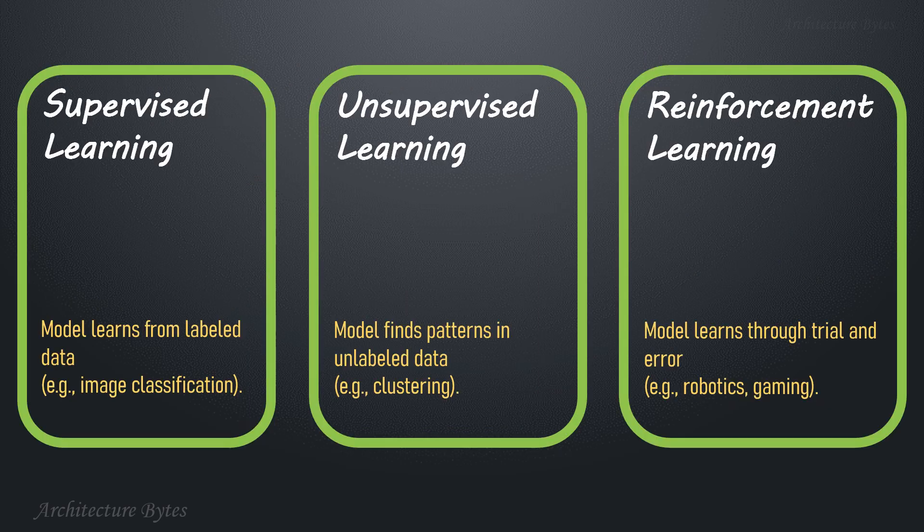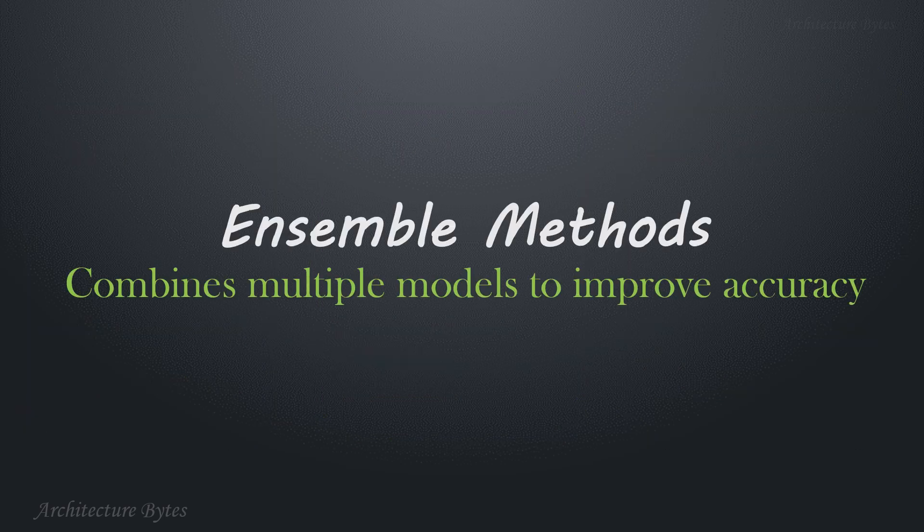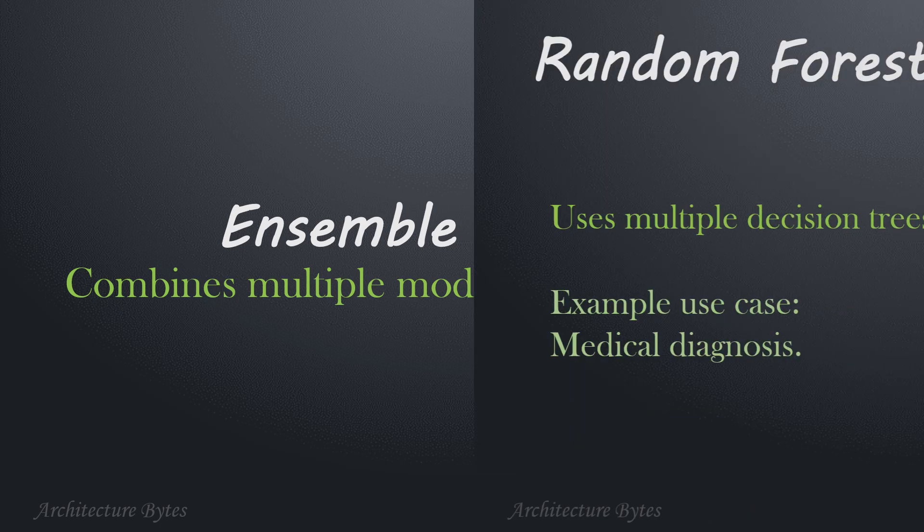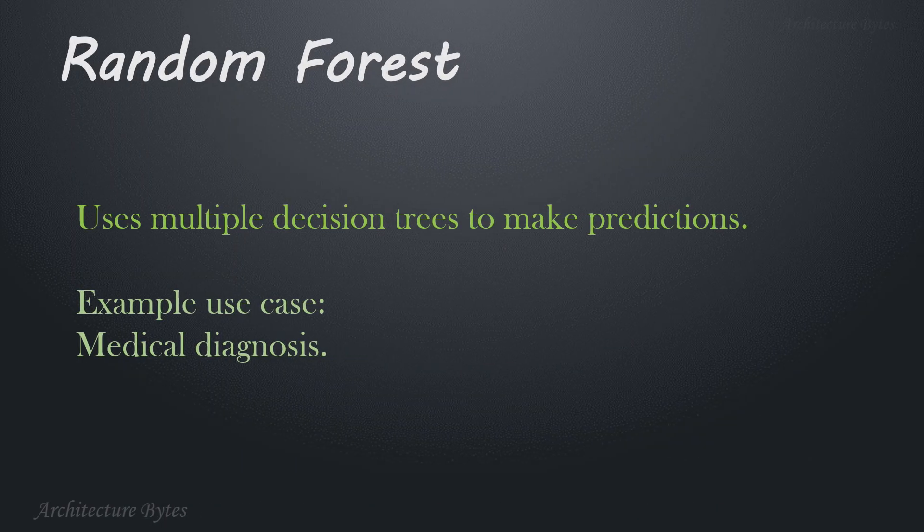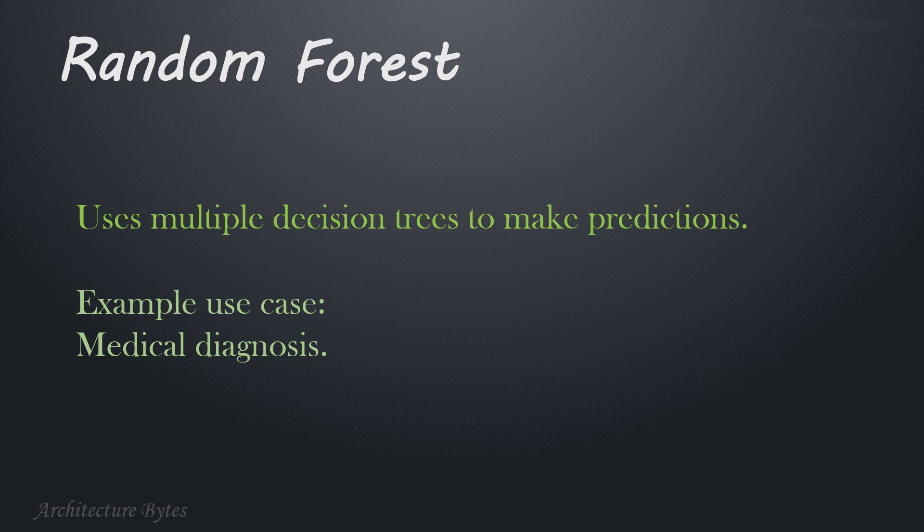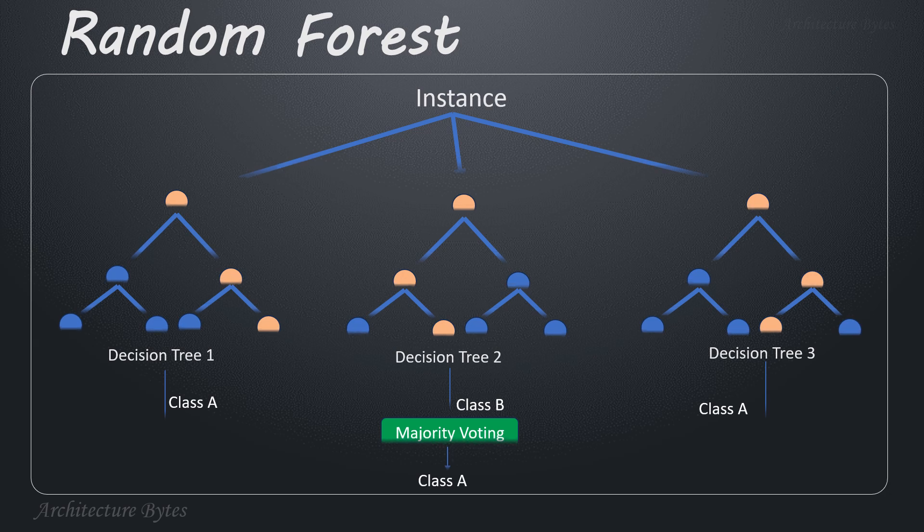Now that we have covered supervised, unsupervised, and reinforcement learning algorithms, let's look at ensemble methods where we combine multiple models to improve accuracy. Random forest uses multiple decision trees to make predictions. Example use case: medical diagnosis. It is an ensemble method that builds multiple decision trees using random subsets of data and features. For classification, it uses majority voting across trees. And for regression, it averages their predictions. This randomness reduces overfitting and improves accuracy.